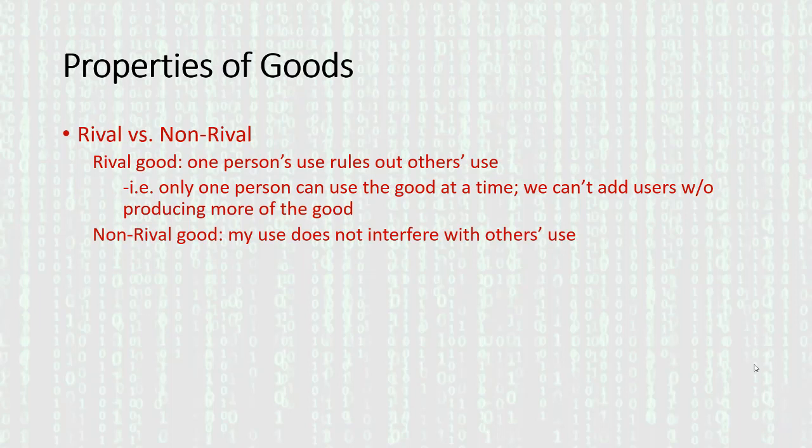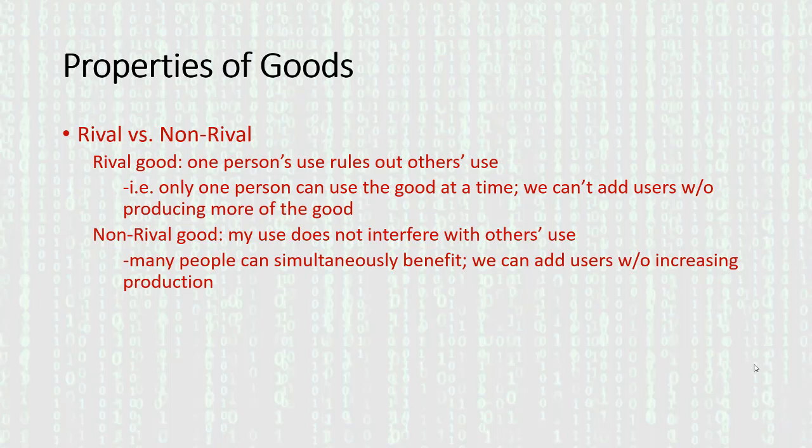With a non-rival good, my use does not rule out or interfere with someone else's use. In other words, many people can simultaneously benefit from this good — we can add users without increasing production. Think about a radio broadcast. I listen to oldies radio, and if you have your own radio set, you can tune in and listen to oldies radio at the same time without hindering my use at all.